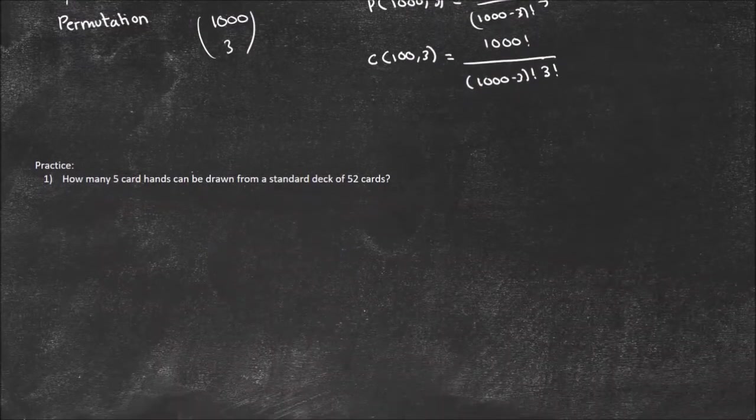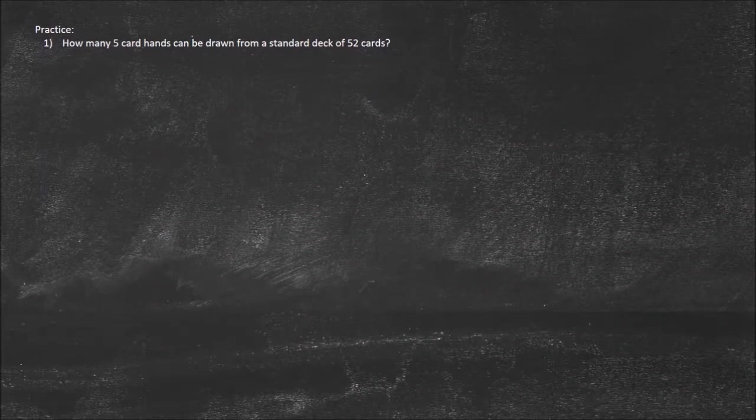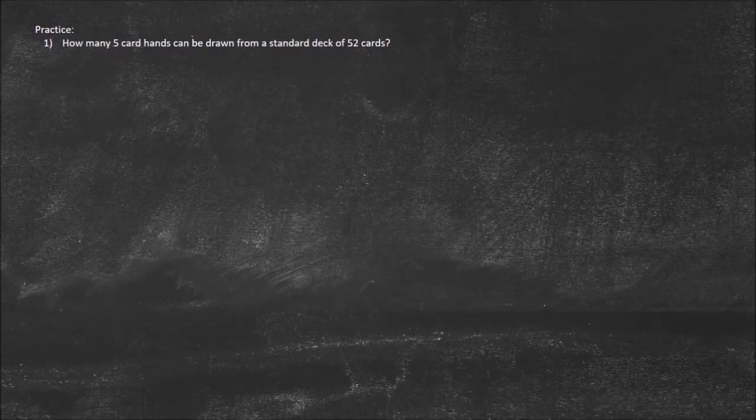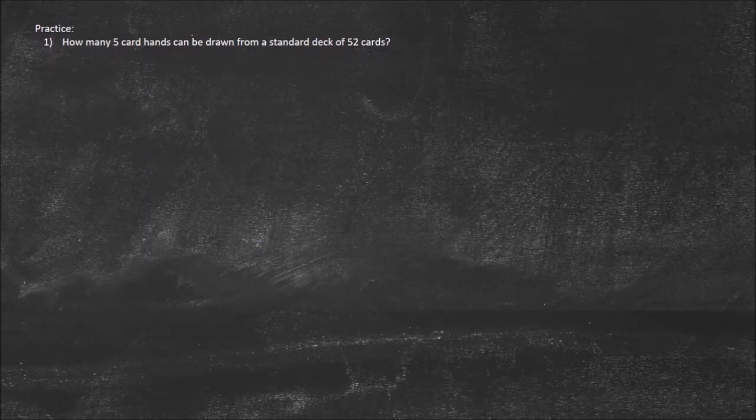Now let's look at some practice with combinations. First: how many five-card hands can be drawn from a standard deck of 52 cards? This is a classic poker question. There are 52 cards and I'm choosing five. I'm going to do a combination and not a permutation because I don't care about order — it doesn't matter if I get the jack first and then the ace second, just what my hand looks like at the end. And repetition is not allowed, because I can't draw the same card twice.